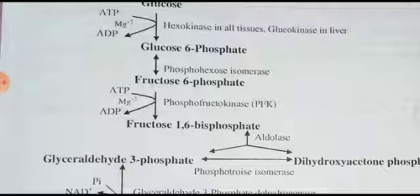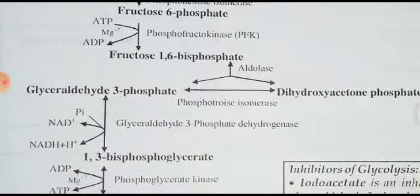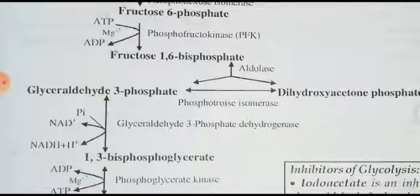Step 3: fructose-6-phosphate is converted to fructose-1,6-bisphosphate. Bisphosphate means two phosphates. One more ATP is added — ATP is converted to ADP — and one phosphate is attached to the first carbon atom of fructose, with the help of enzyme phosphofructokinase. Wherever ATP is involved, the enzyme name ends in 'kinase,' since kinase indicates energy involvement. So hexokinase and phosphofructokinase both end in kinase because ATP is used.